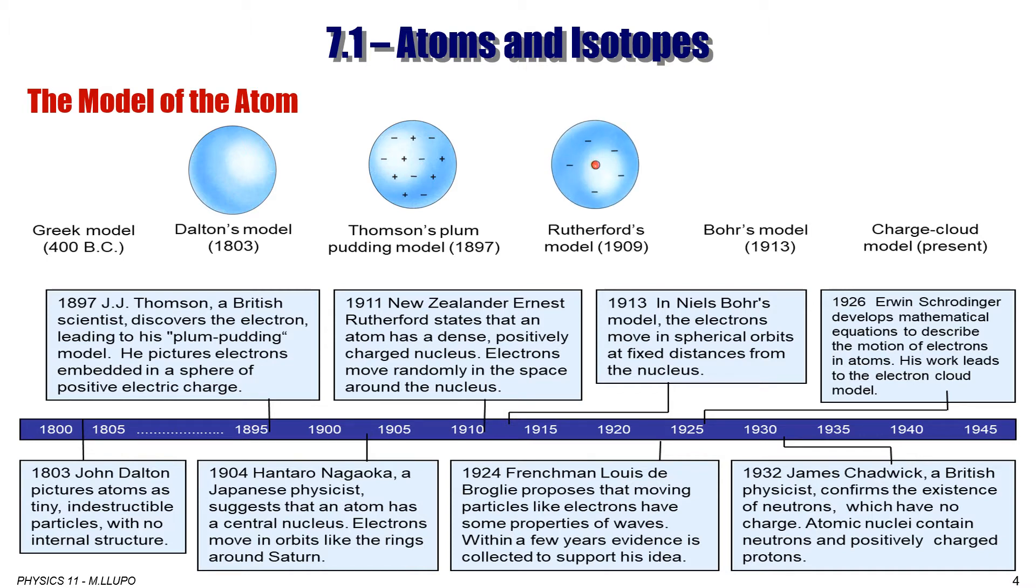His student, Niels Bohr, in 1913, came up with his model, which is the basic model that explains the structure of the atom nowadays. That electrons move in spherical orbits at a fixed distance from the nucleus.